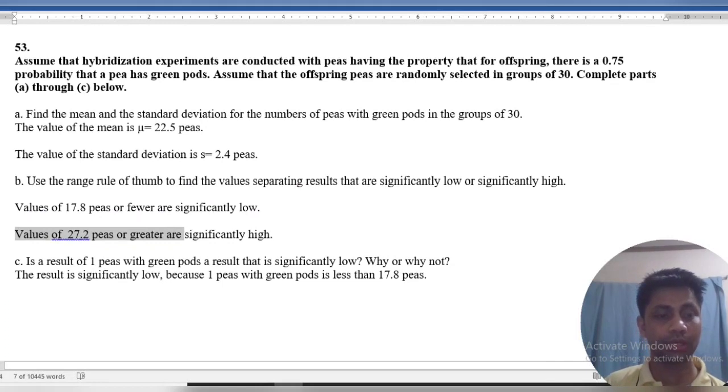Part C: Is a result of 1 pea with green pods significantly low? Why or why not? The result is significantly low because 1 pea with green pods is less than 17.8. We can say that 1 is significantly low.